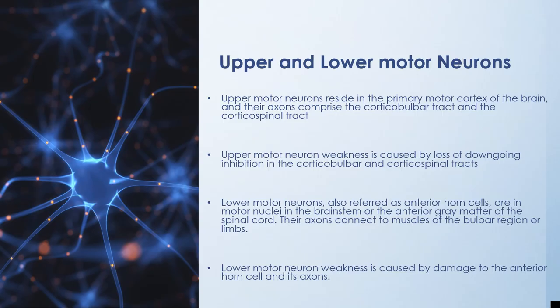Before understanding ALS clinical presentation, it's important to understand upper and lower motor neurons. Upper motor neurons reside in the primary motor cortex and their axons comprise the corticobulbar and corticospinal tracts; their weakness is caused by loss of downgoing inhibition. Lower motor neurons, also called anterior horn cells, are in the motor nuclei of the brainstem or anterior gray matter of the spinal cord; their axons connect to bulbar or limb muscles, and lower motor neuron weakness results from damage to these cells and their axons.